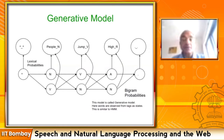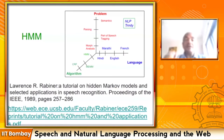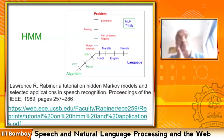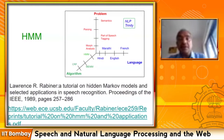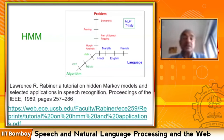We are now required to understand what is the theory based on which we can create that automaton — the automaton composed of state transitions and emissions with their probabilities.